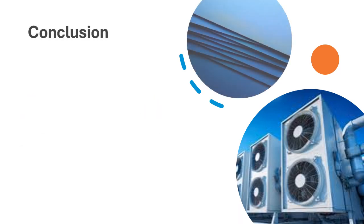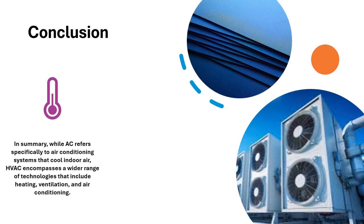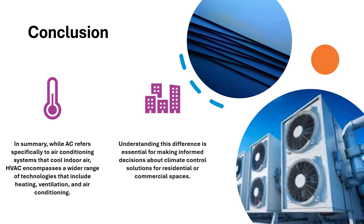In summary, while AC refers specifically to air conditioning systems that cool indoor air, HVAC encompasses a wider range of technologies that include heating, ventilation, and air conditioning. Understanding this difference is essential for making informed decisions about climate control solutions for residential or commercial spaces.